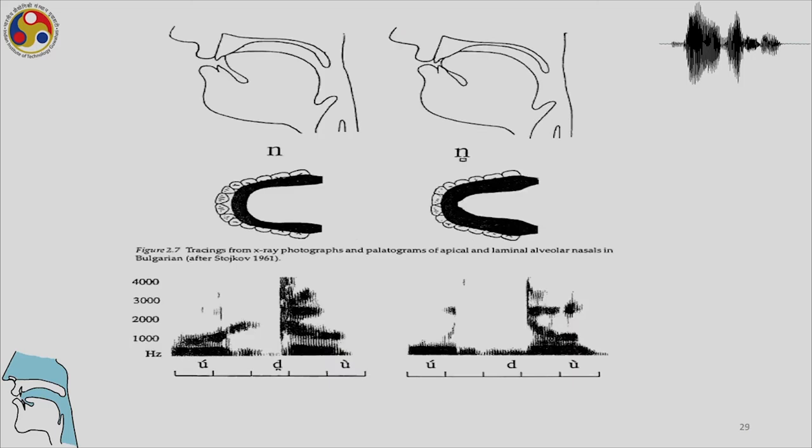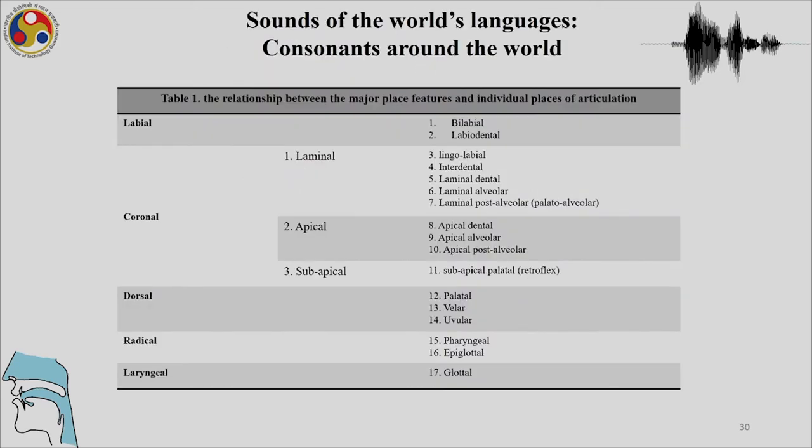Bulgarian has both apical and laminal alveolar nasals, and you can see a slight difference in the gestures between the apical and laminal alveolar nasals. Very few languages have these distinctions, and Bulgarian is known to have this.